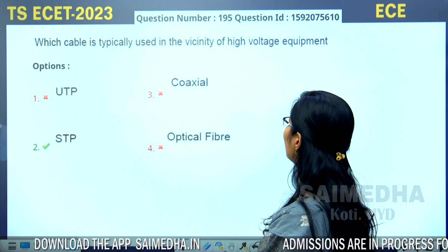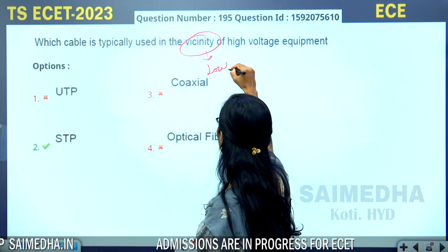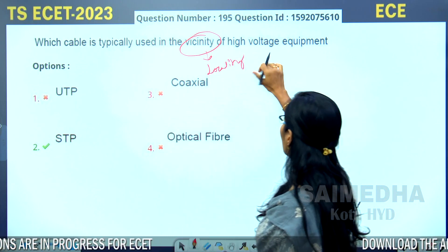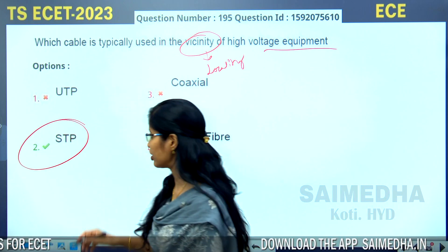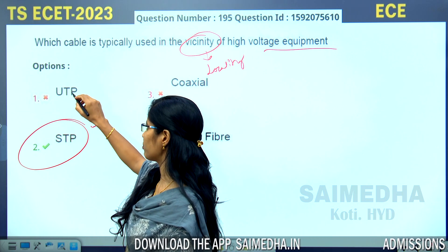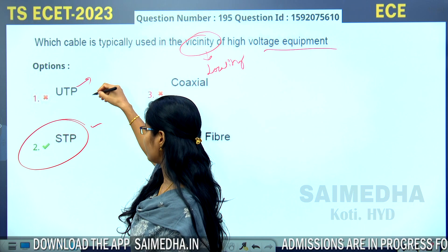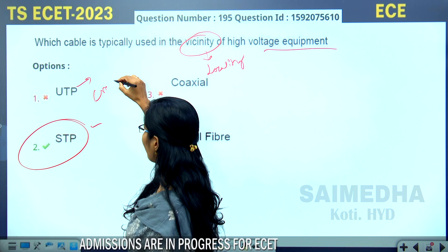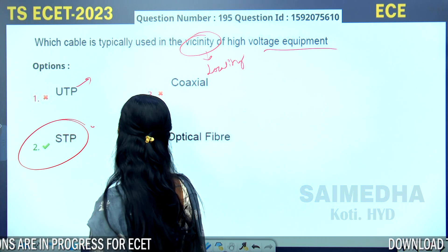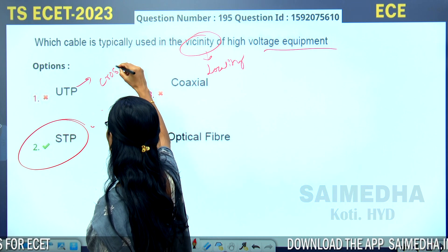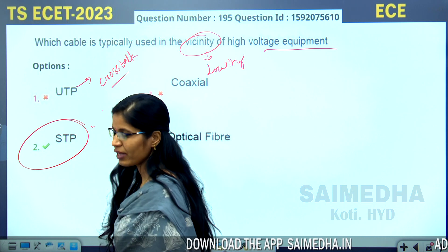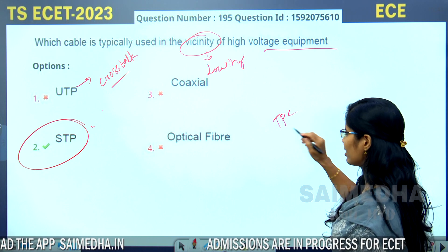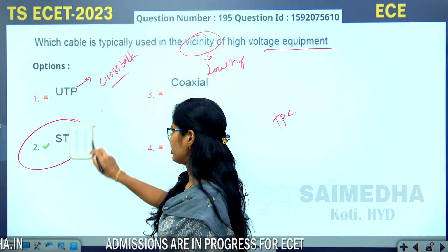Which cable is typically used in the vicinity of high voltage equipment? Among these cables, STP — Shielded Twisted Pair cable — is used for high voltage environments. In unshielded twisted pair (UTP) cable there is more cross-talk, which means noise. But in STP there is no cross-talk, and the cost of twisted pair cables is less compared to other cables. So STP is the correct answer.